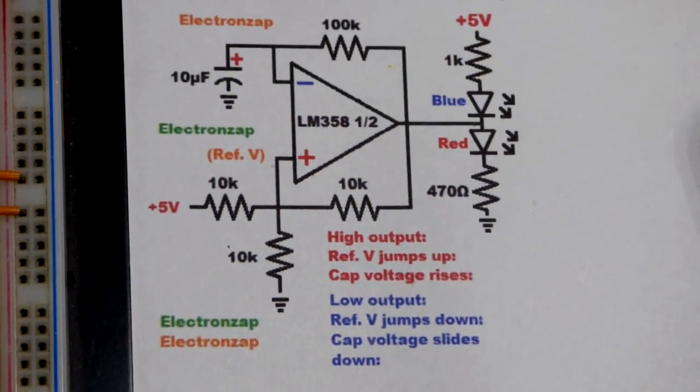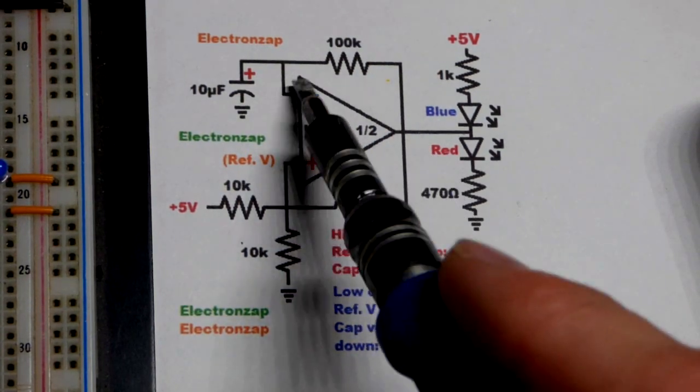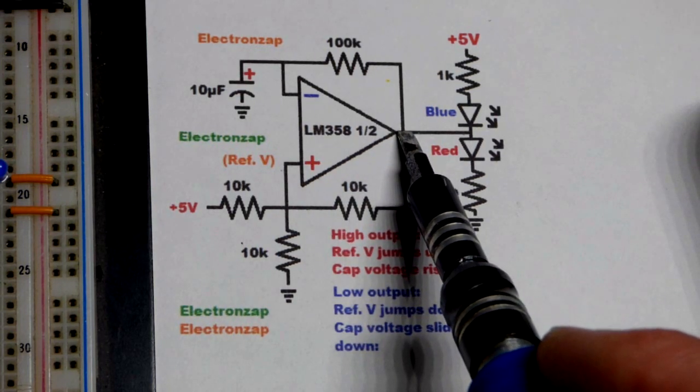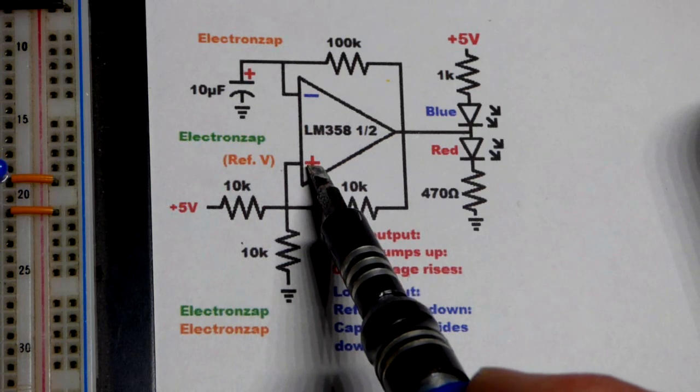Being an op-amp, the output is determined by the input voltages and this is going to either be high or low. We have at the non-inverting input, the plus, that's going to be our reference voltage.